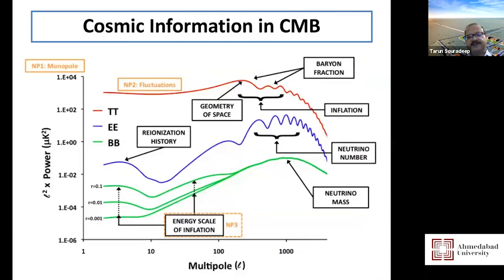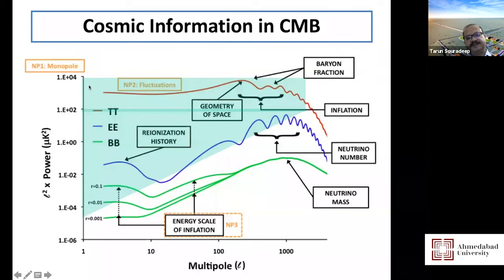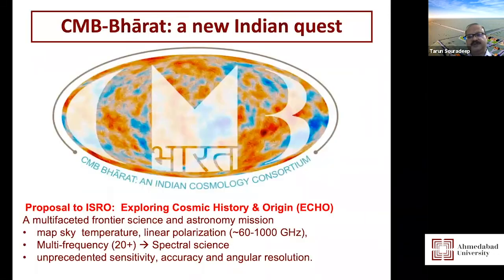To do this we need experiments that dig deeper. In a power spectrum versus angular scale plot, the predicted temperature fluctuation is the highest, then one kind of polarization about a tenth of that, and then the B-mode signal — uncertain but about a hundredth or thousandth of the temperature signal. Our current satellites have mapped the first two well (the cyan band), but we need more sensitive satellites to see the green curves — the signal of gravitational waves from the very origin of the universe.